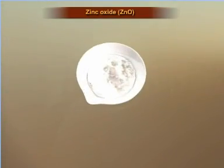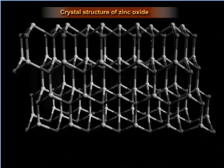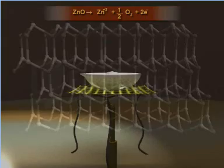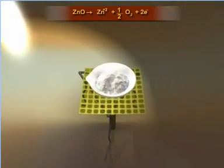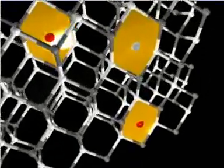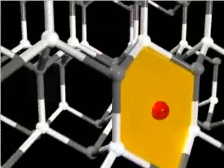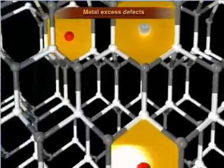Let's now consider an example to explore the metal excess defects that arise due to the presence of extra metal ions. When zinc oxide is heated, some oxygen gas is released from it. The remaining extra metal ions and free electrons produced during the reaction occupy the interstitial sites, thereby developing the metal excess defect in the crystal.